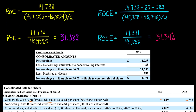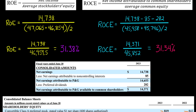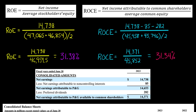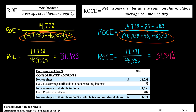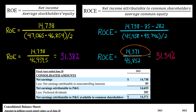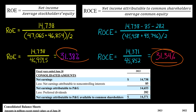Going back to our formula for return on common equity, in the denominator we have the average common equity — not the average total equity — which is why the denominator differs from the return on equity calculation. We have 14.371 billion divided by 45.852 billion, giving us 31.34%. As you can see, there's not that huge a difference here between the return on common equity and the return on equity.